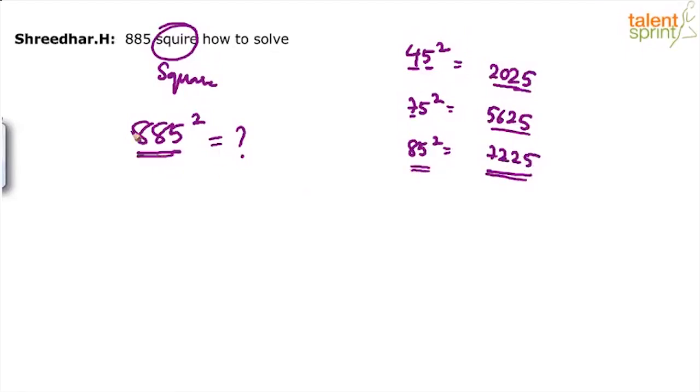So 885, fortunately here it's ending in 5, so it's easier. What do we do? Because it is ending in 5, the answer would end in 25. What comes here in the remaining part? You just take this number 88, multiply with the next integer which is 89. That's it.